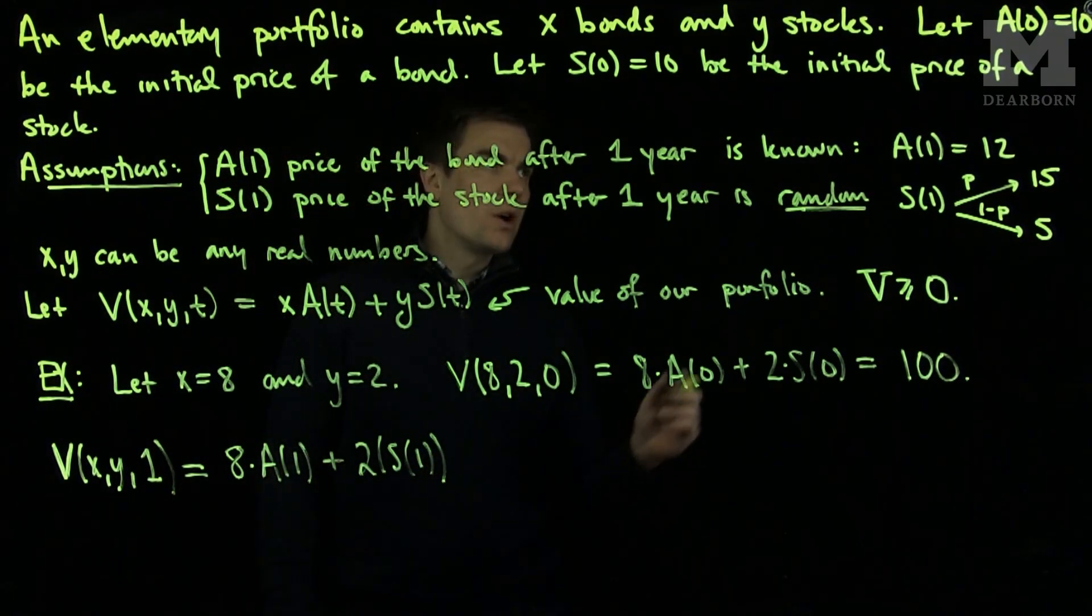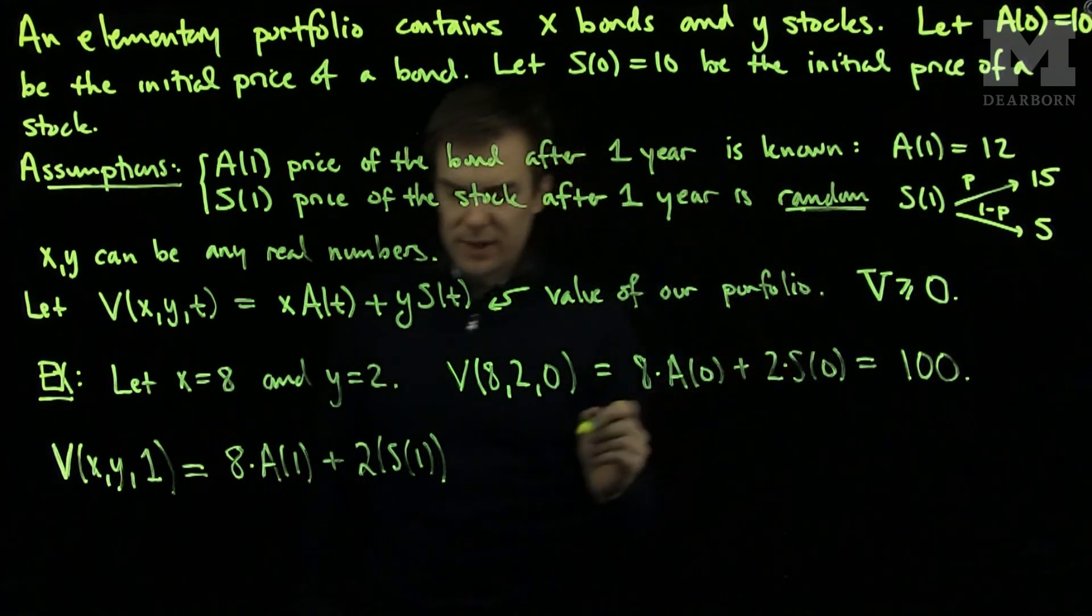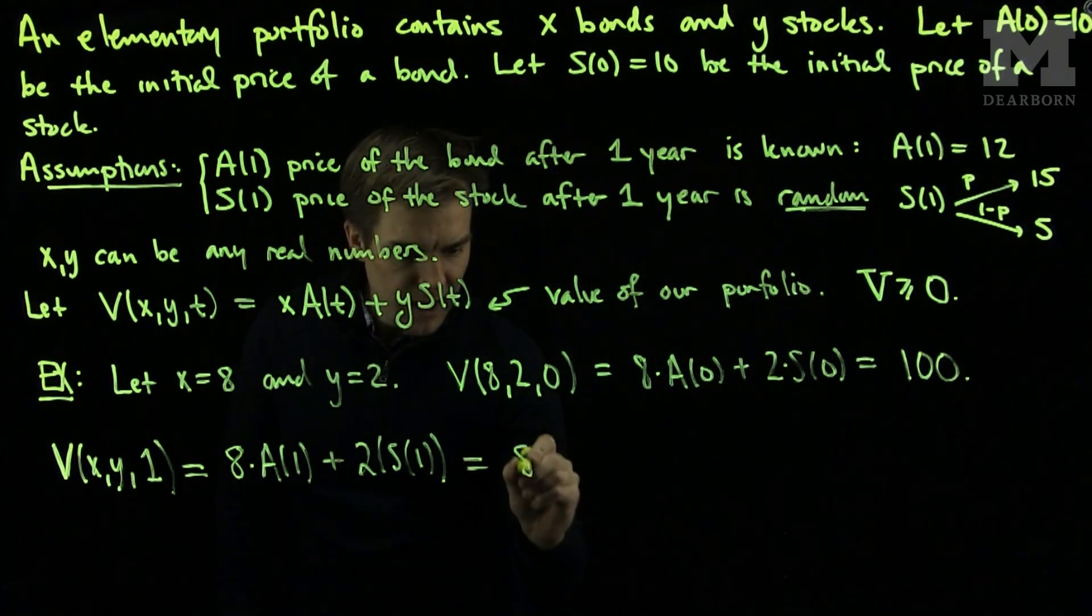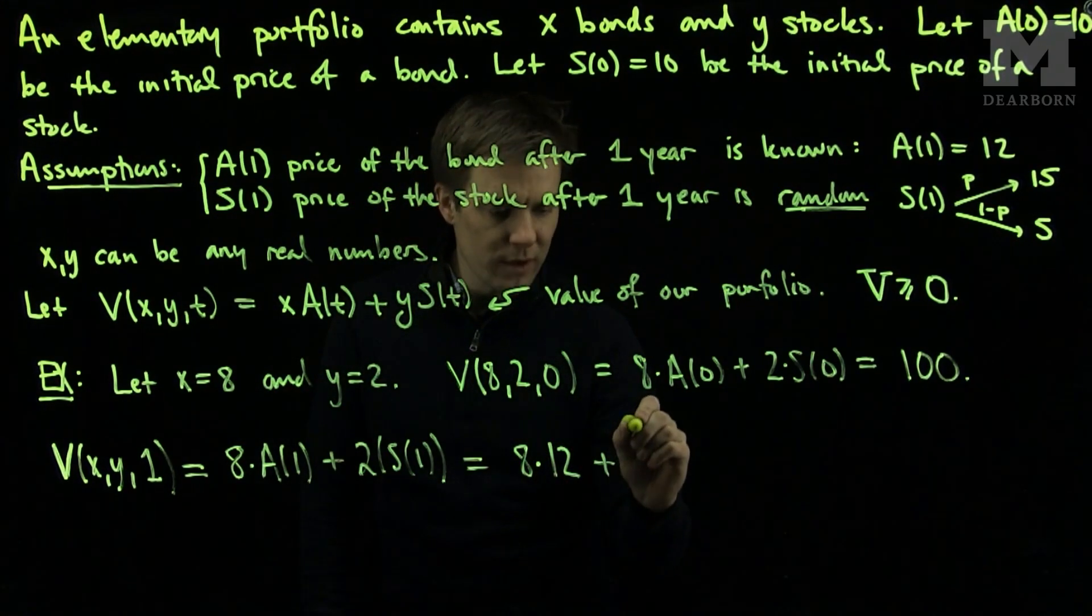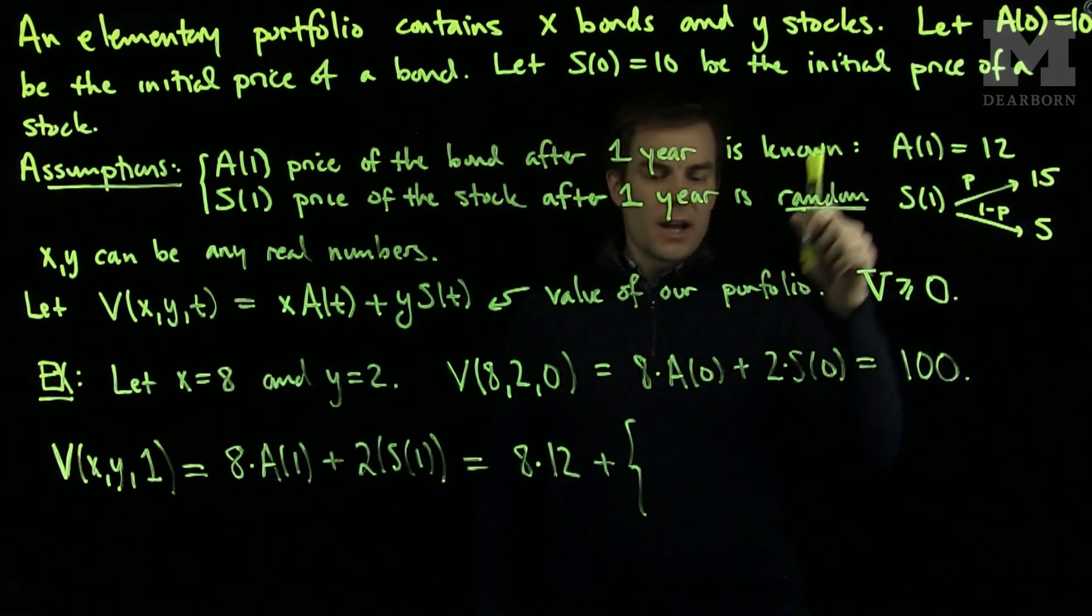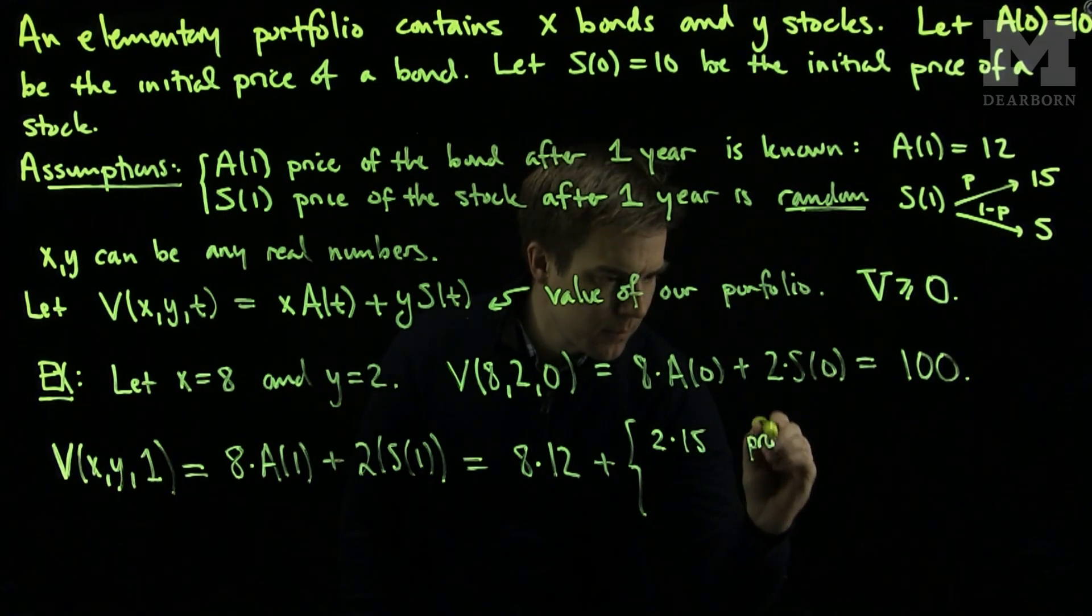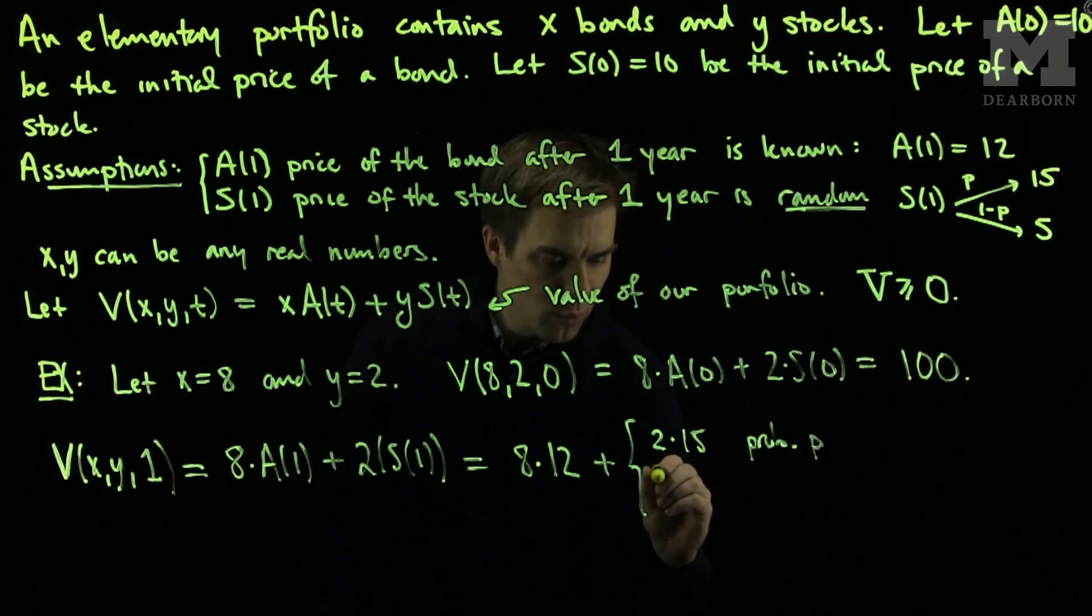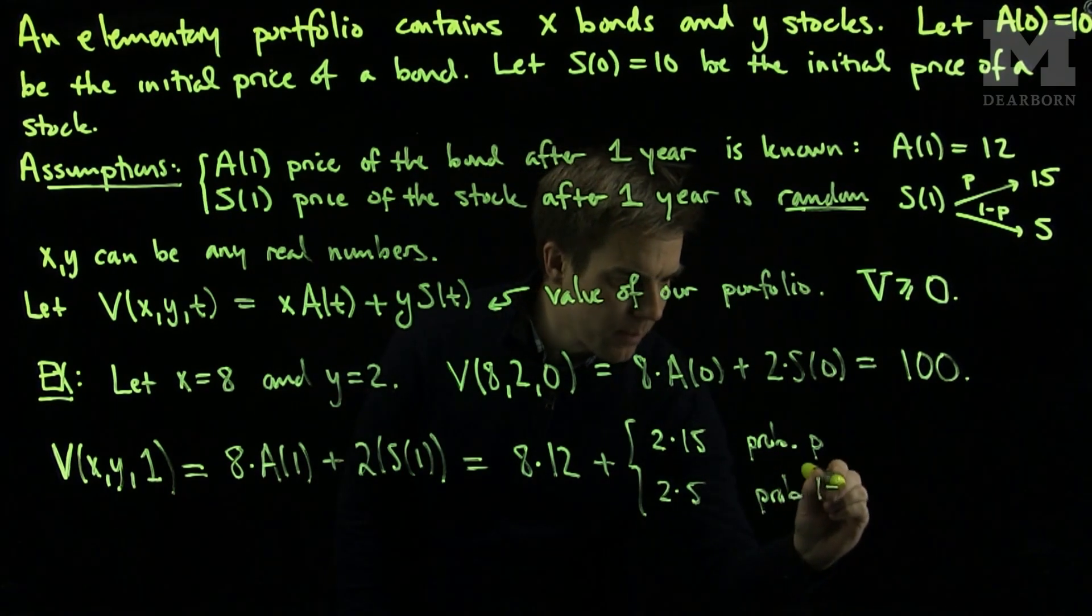Now we know what A(1) is. We know that A(1) is going to be 12 in our example. So this will be 8 times 12, plus 1 of 2 things. It will be 2 times 15 with probability P, and it will be 2 times 5 with probability 1 minus P.